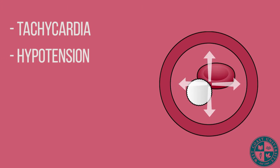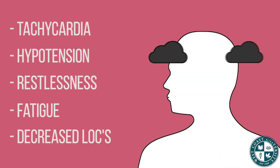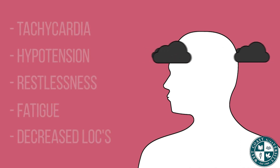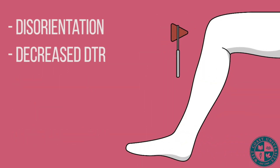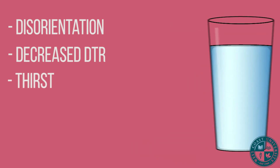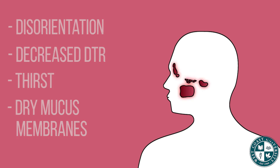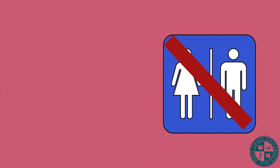What are our expected findings for the hypernatremic patient? They may present with tachycardia, hypotension, restlessness, fatigue, decreased LOC which is level of consciousness, disorientation, and decreased DTRs. The client may report being thirsty, have dry mucus membranes, hyperactive bowel sounds, and oliguria, to name a few.